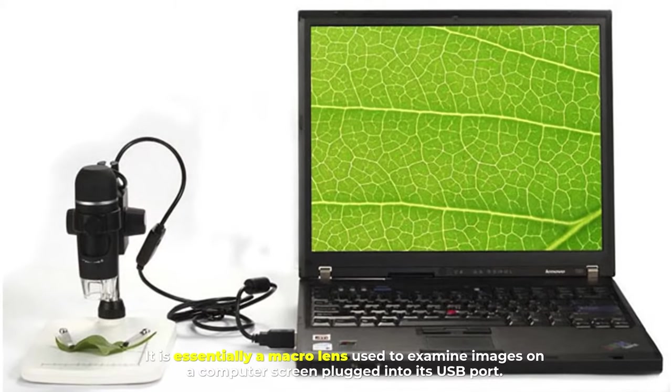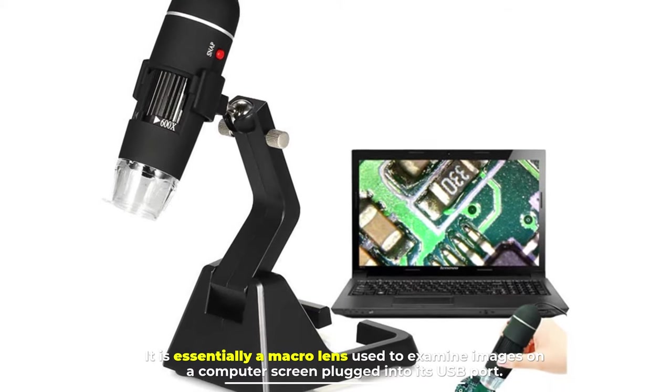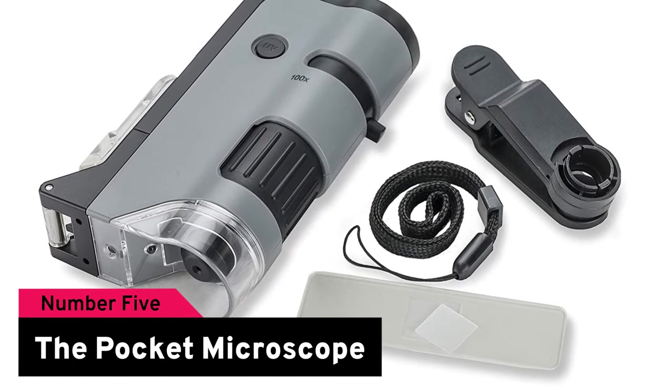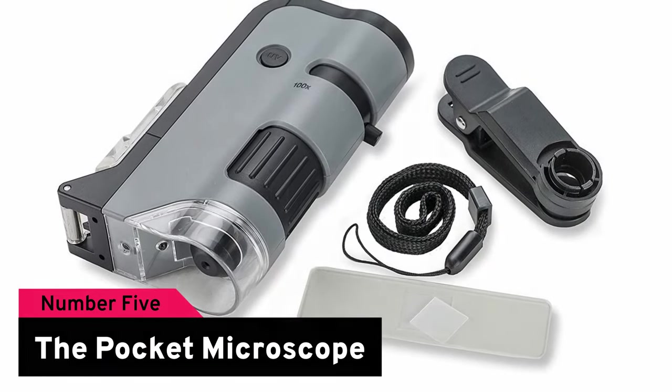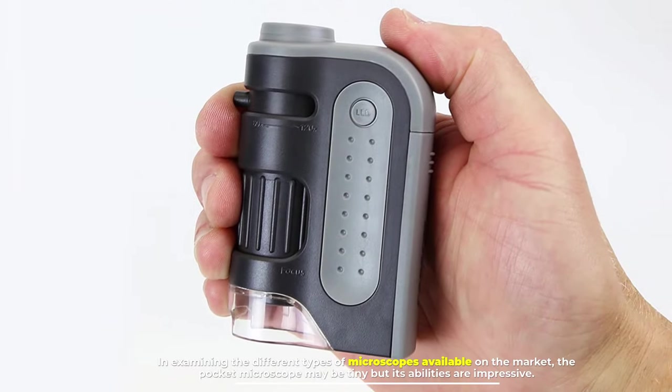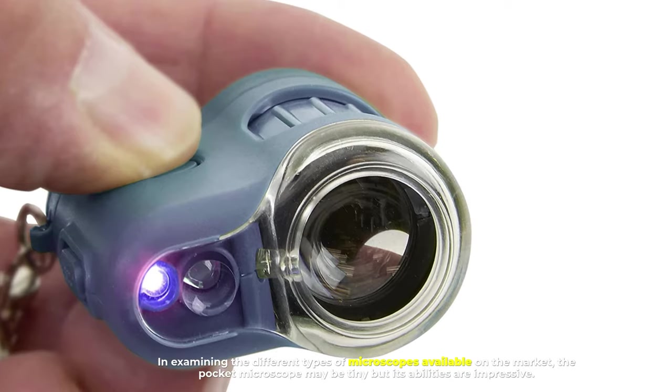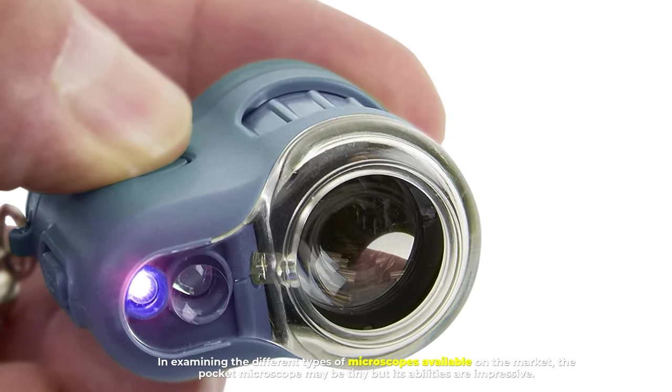Number five: the pocket microscope. In examining the different types of microscopes available on the market, the pocket microscope may be tiny, but its abilities are impressive.